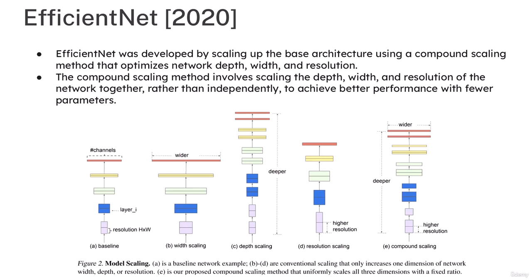Let's get started with EfficientNet. EfficientNet was developed by scaling up the base architecture using the compound scaling method that optimizes network depth, width, and resolution. The concept of EfficientNet was to make a single network which can work on both computer devices as well as mobile devices.